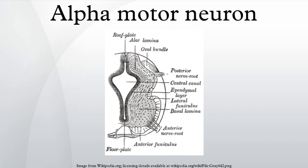For example, the muscles of a single finger have more alpha motor neurons per fiber, and more alpha motor neurons in total, than the muscles of the quadriceps, which allows for finer control of the force a finger applies. In general, alpha motor neurons on one side of the brainstem or spinal cord innervate muscles on that same side of the body.